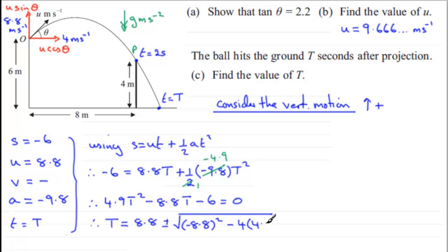And then minus 4 times A, A being 4.9, times C, C being the minus 6. And all of this is divided by 2A, so that's 2 times 4.9.